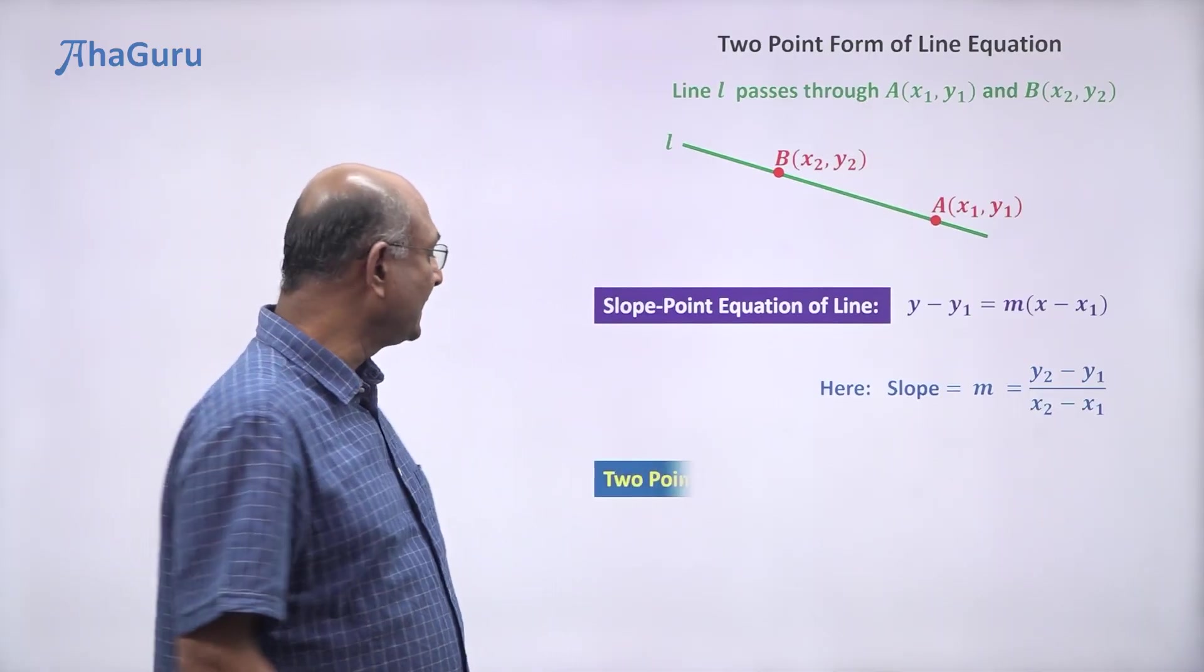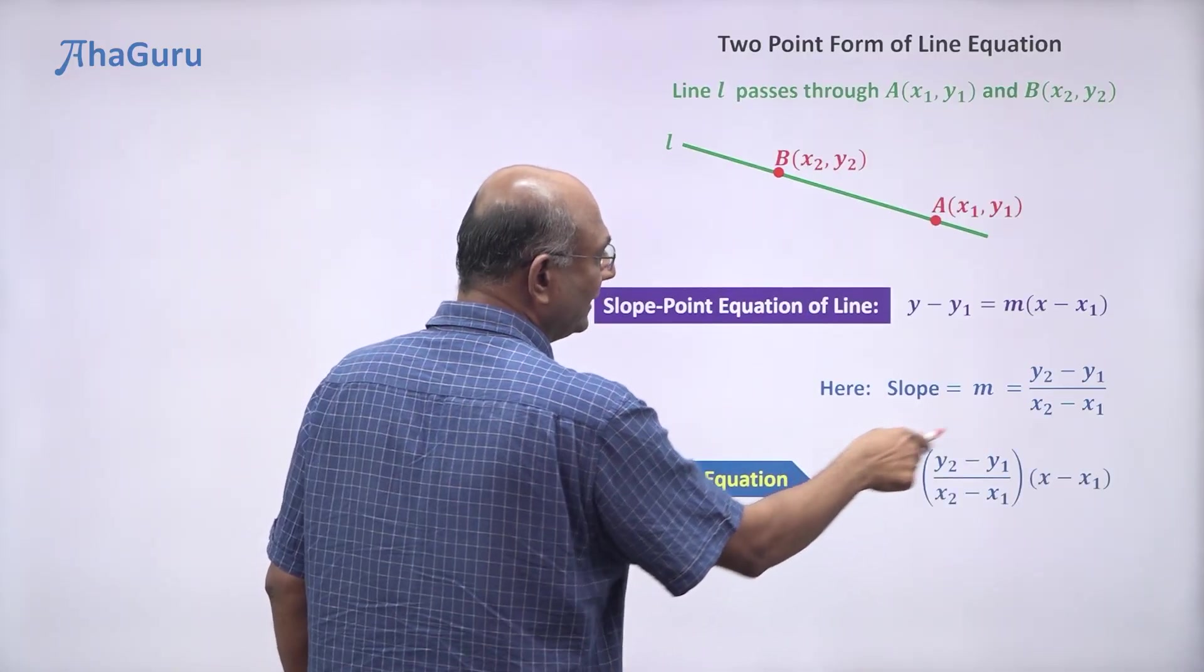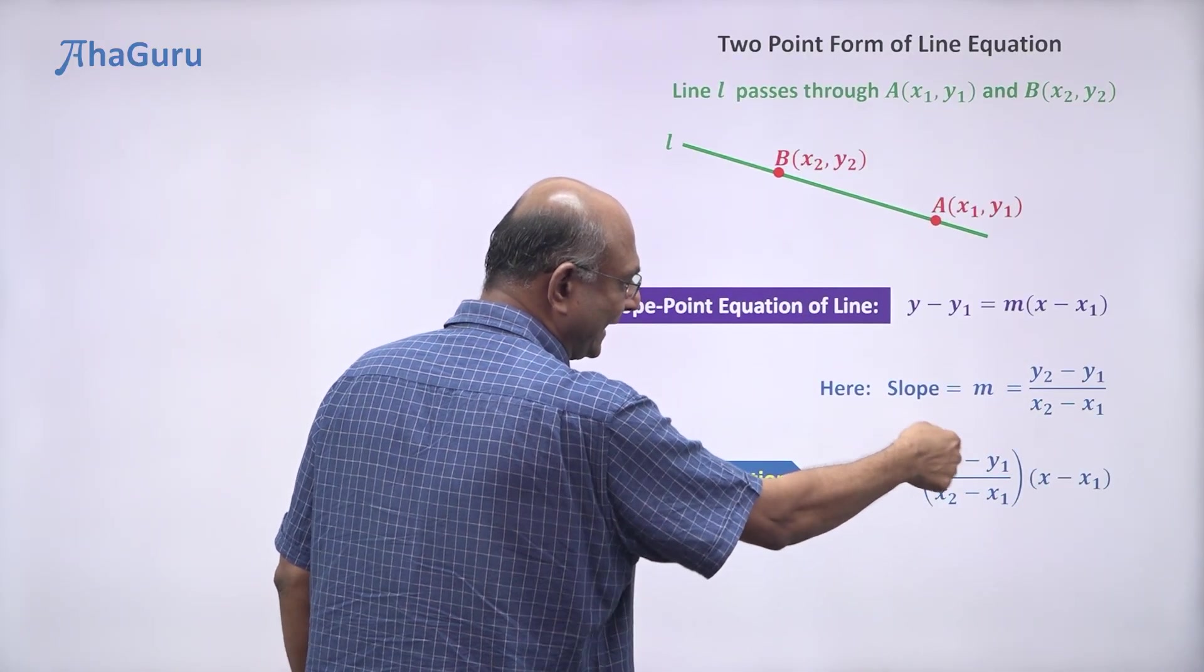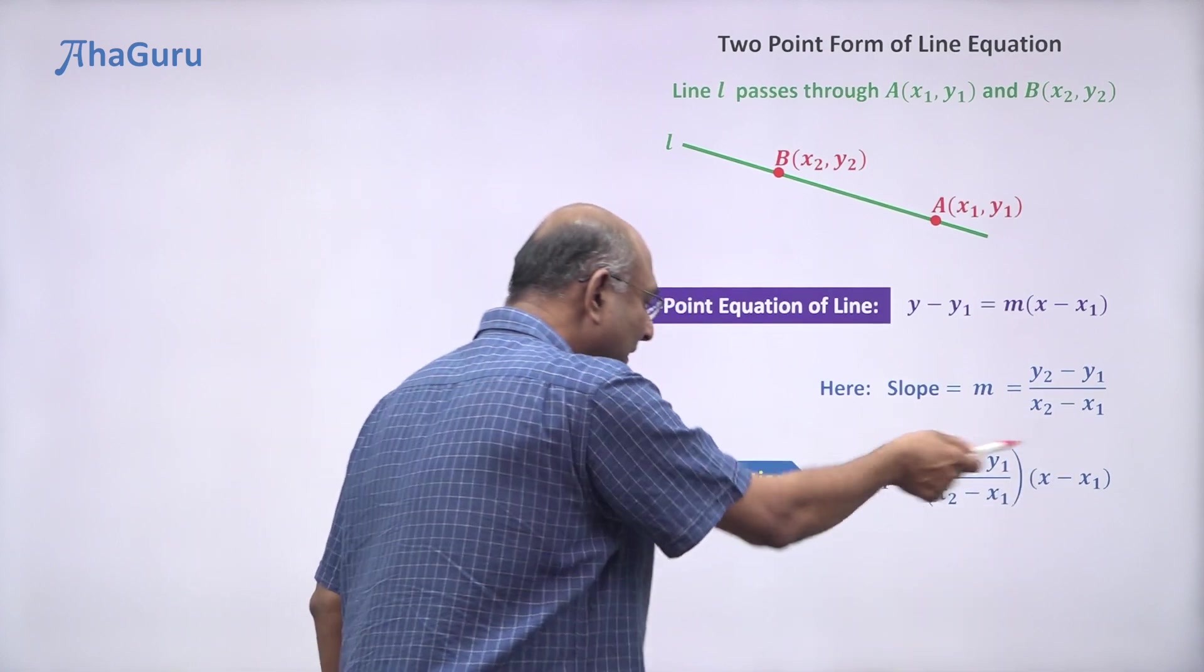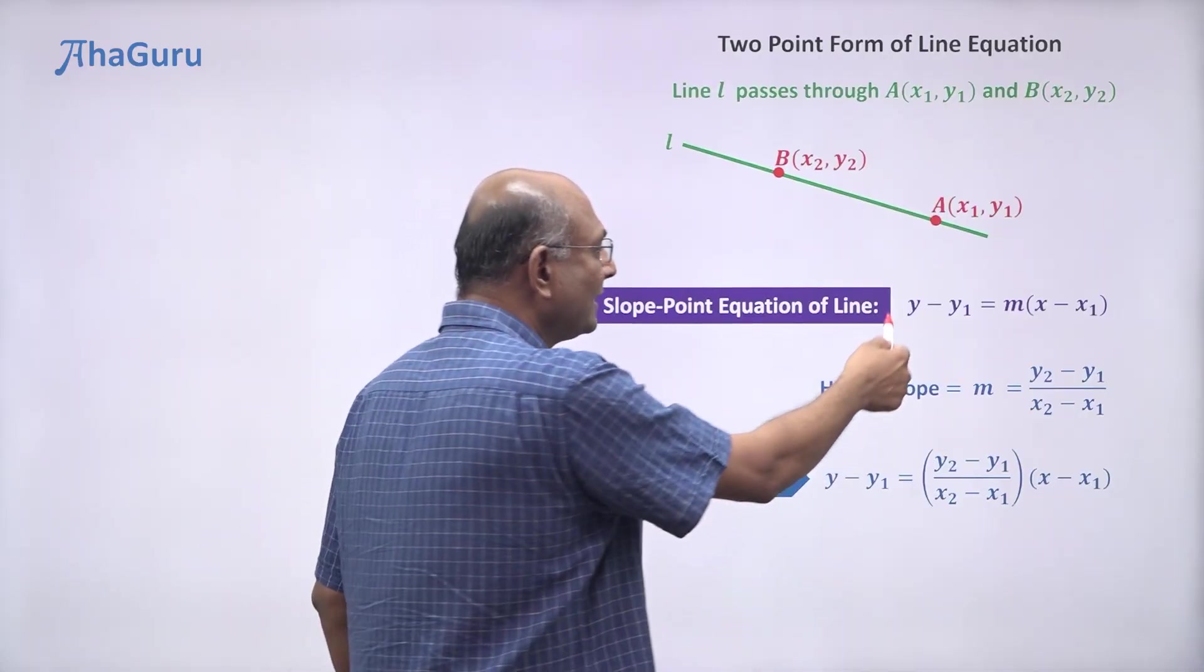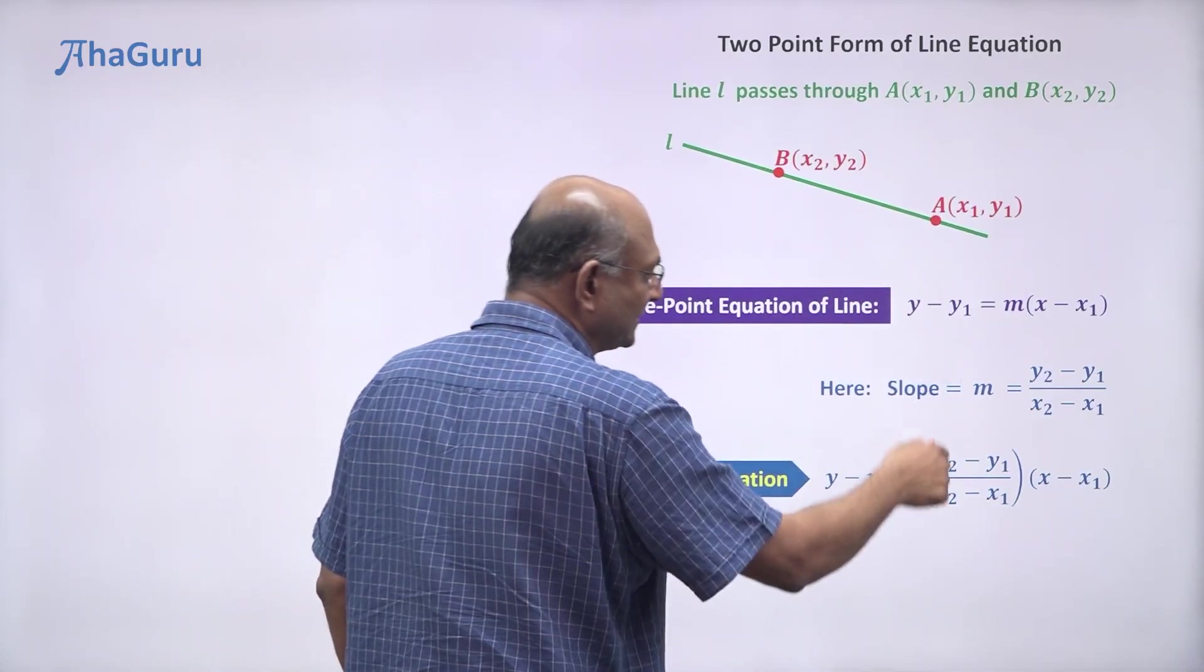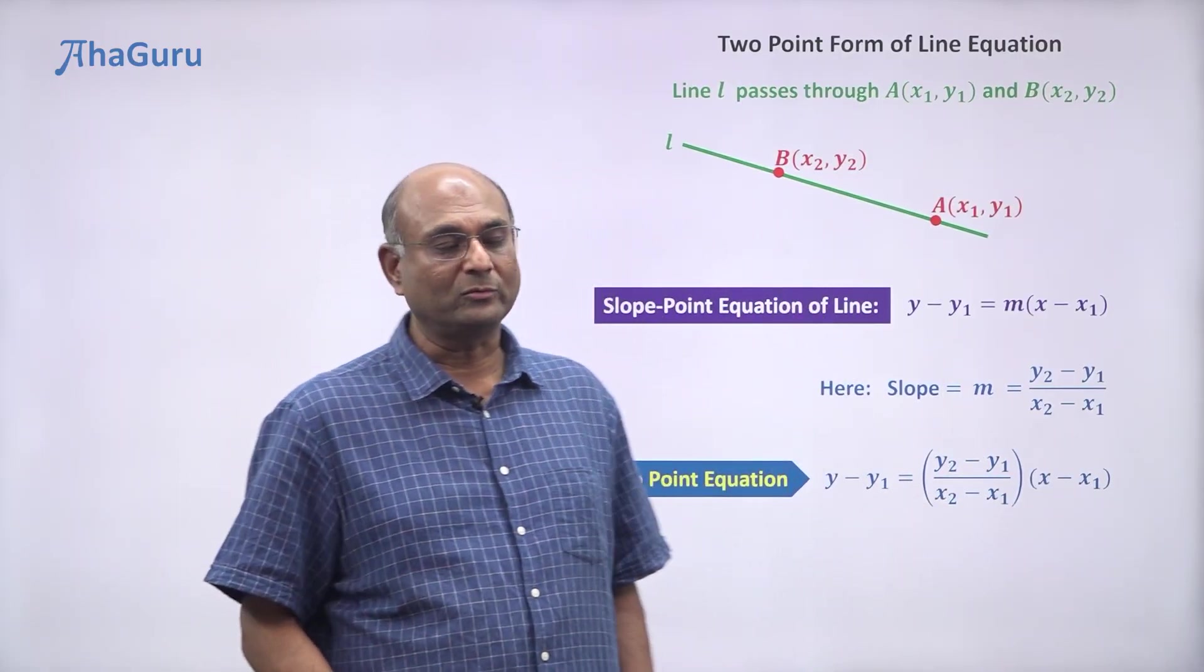If I take this slope value and substitute it there, I get the two-point equation of the line: y - y₁ = m(x - x₁), where m = (y₂ - y₁)/(x₂ - x₁). So this is nothing but the earlier equation that we had, except the value of m is computed using the values of x₁, y₁ and x₂, y₂.